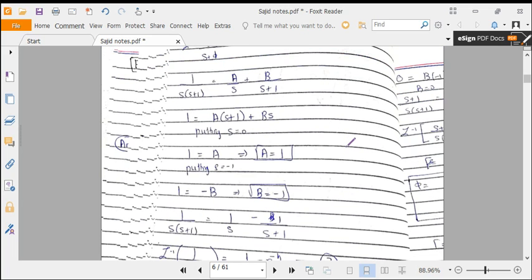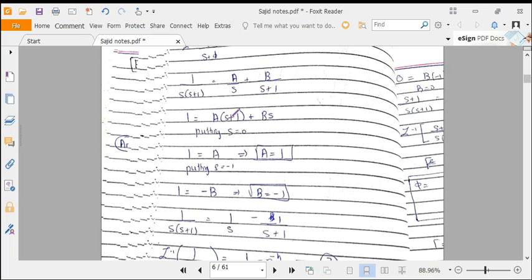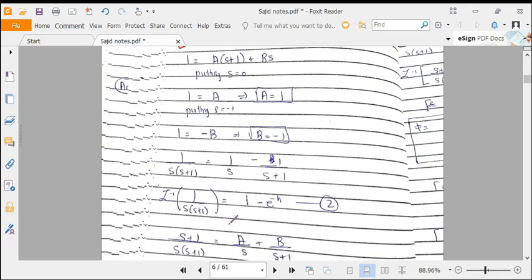We are doing it by using partial fractions. We have converted this into A/s plus B/(s+1). So we are solving this - I'm pretty sure you can solve this by yourself - and we get A equals 1 and B equals -1. Putting A and B into this equation, we get 1/(s(s+1)) equals 1/s minus 1/(s+1).